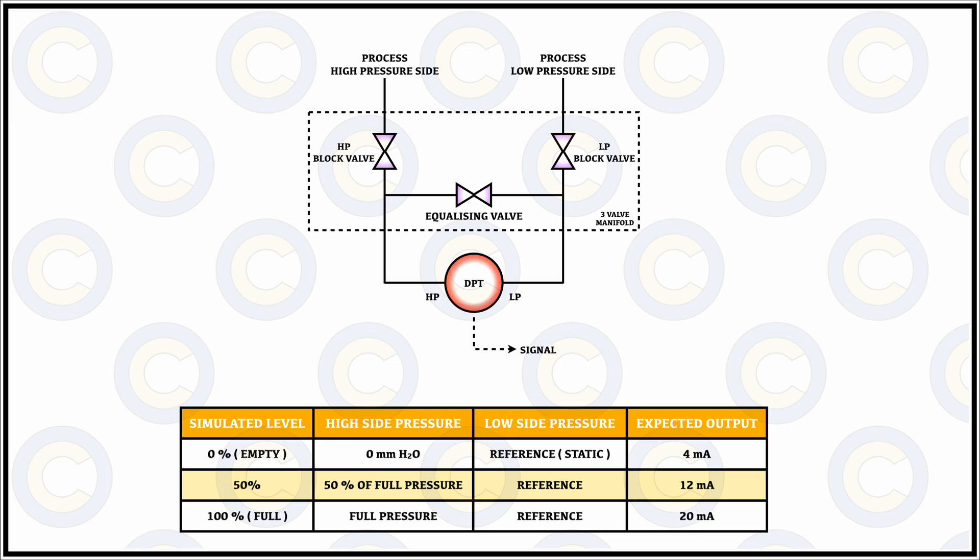As we keep on changing or varying the pressure from low to the high side by the help of the hand pump that we have connected on the high pressure side, it would simultaneously vary the current output and thus accordingly we can check the level of the pressure in terms of calibration with respect to the reference or manual values.